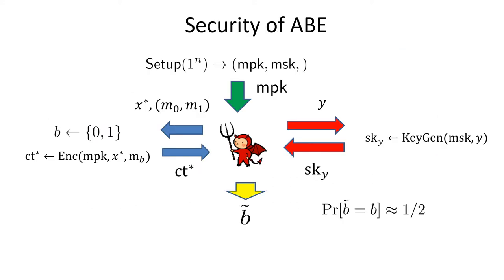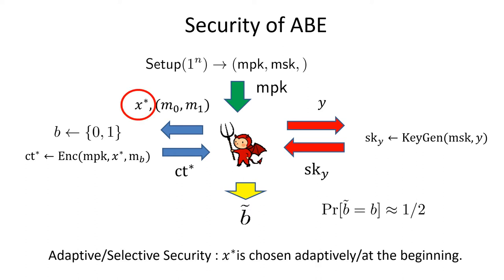Let me explain the security notion for ABE. The security of ABE is defined by a game between an adversary and a challenger. Essentially, it requires that the adversary cannot see any information of a message encrypted under the target attribute x* chosen by the adversary, if it is only given secret keys with some attributes that are not authorized to decrypt the ciphertext. We consider two types of security notions: selective security and adaptive security. The selective and adaptive security differ with respect to the flexibility given to the adversary as to when it should choose the target x*. In adaptive security, the adversary chooses x* at any point adaptively. On the other hand, in selective security, it should choose it at the beginning of the game.